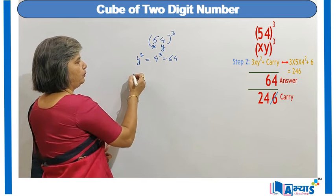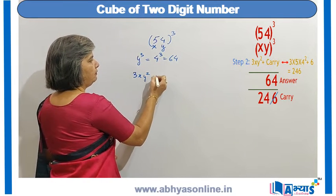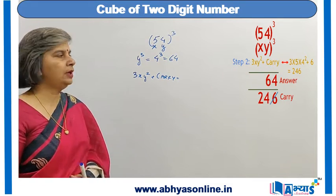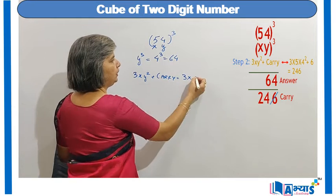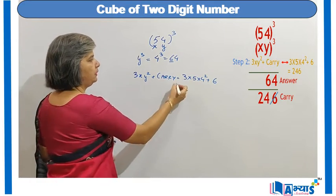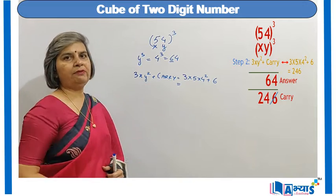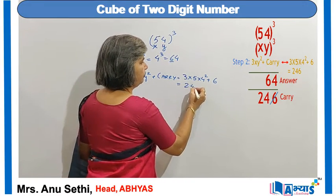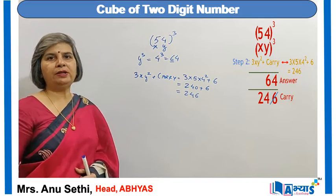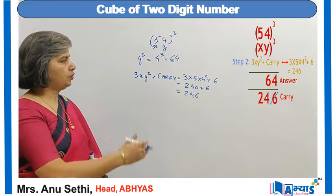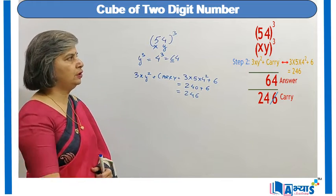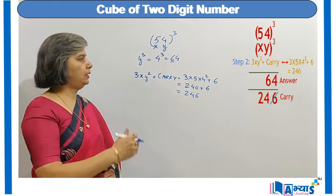In the next step I find the product of 3xy² and add the carry. So it is 3 × 5 × 4² + 6. Now 4² is 16, 16 × 5 is 80, and 80 × 3 is 240. So 240 + 6 = 246. The digit at the units place, 6, is prefixed in the answer, giving 64, and the carry is now 24.